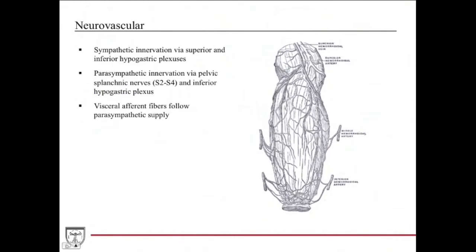The nervous innervation of the rectum: its sympathetic innervation is via the superior and inferior hypogastric plexuses. The parasympathetic innervation is via the pelvic splanchnic nerves and also via the inferior hypogastric plexus. The visceral afferent fibers follow the parasympathetic supply.